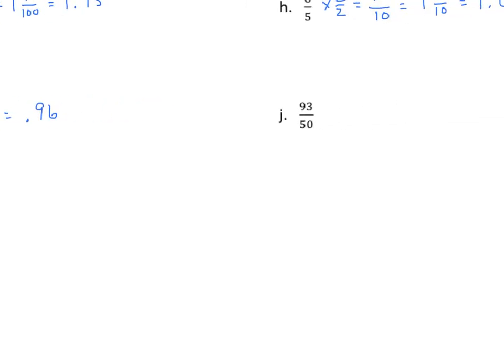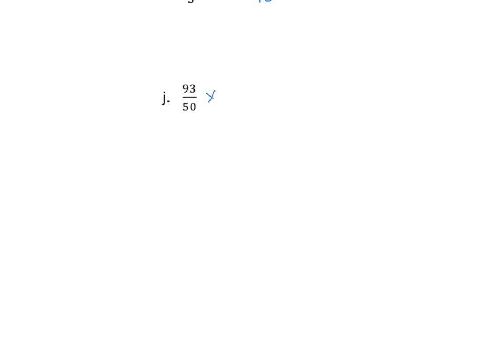Final example here: 93 fiftieths. I know I can multiply 50 times 2, so 2 halves. 93 times 2 would be 186, and 50 times 2 is 100. That's 1 and 86 hundredths, or as a decimal, 1.86.